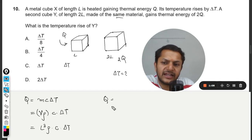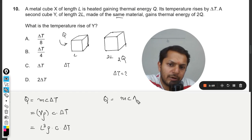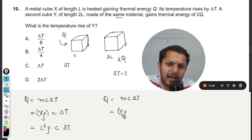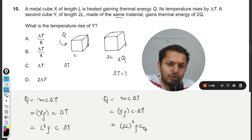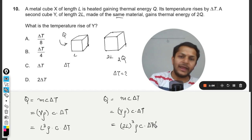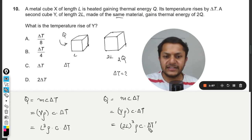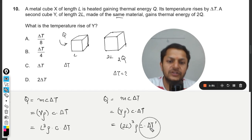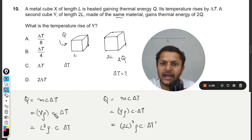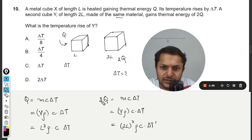Now let us talk about the second block. Again, applying Q = mcΔT — the formula is the same — but now the volume will be (2l)³. So 2Q = (2l)³ × ρ × c × ΔT', where ΔT' is the temperature rise we need to find, and the heat is 2Q.